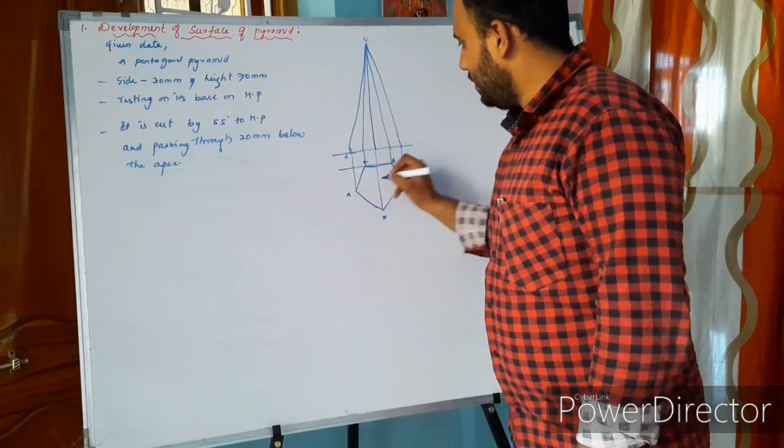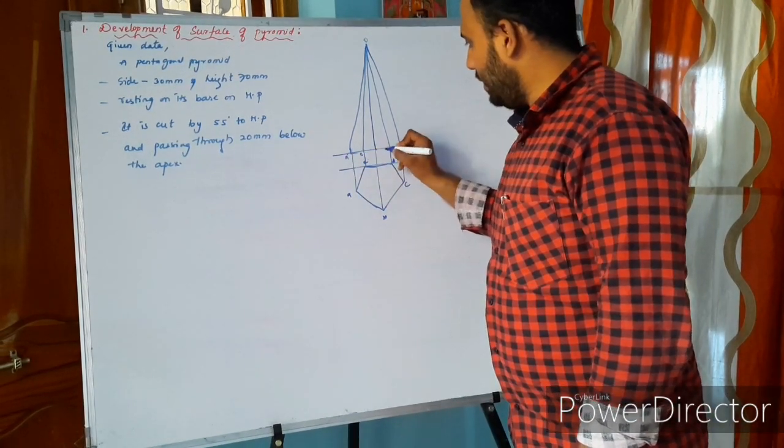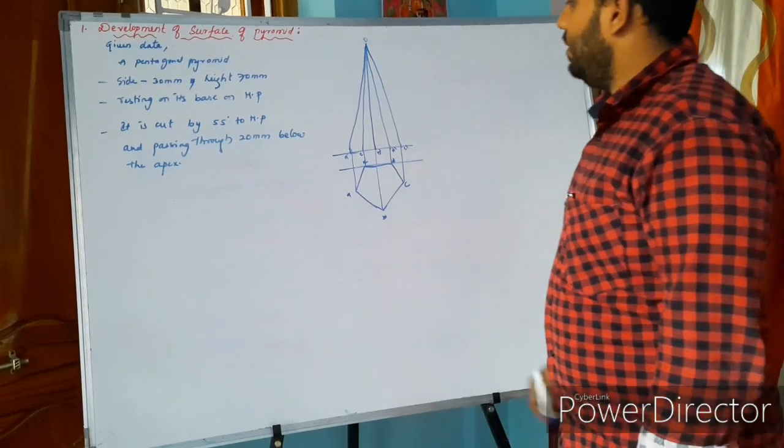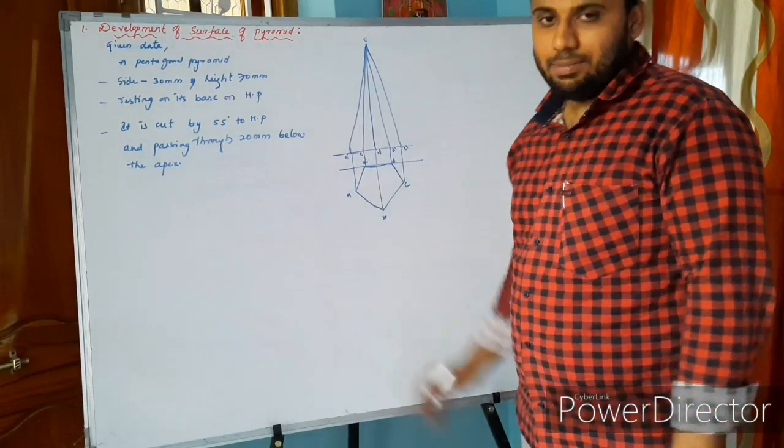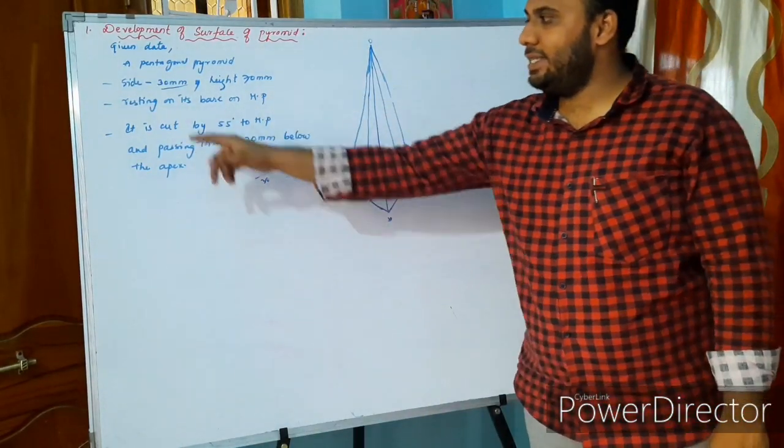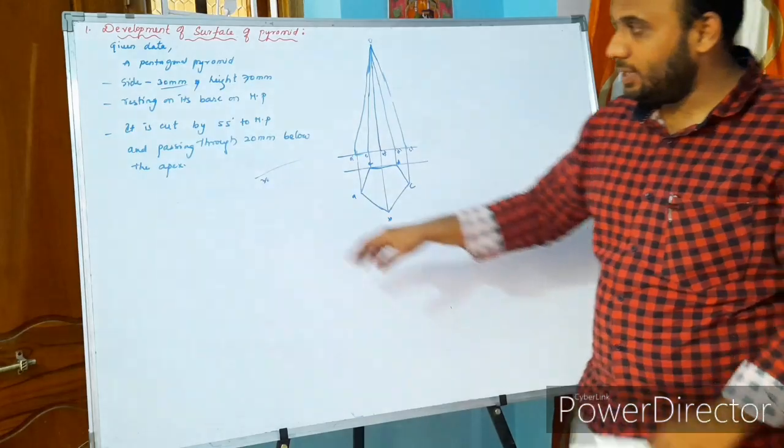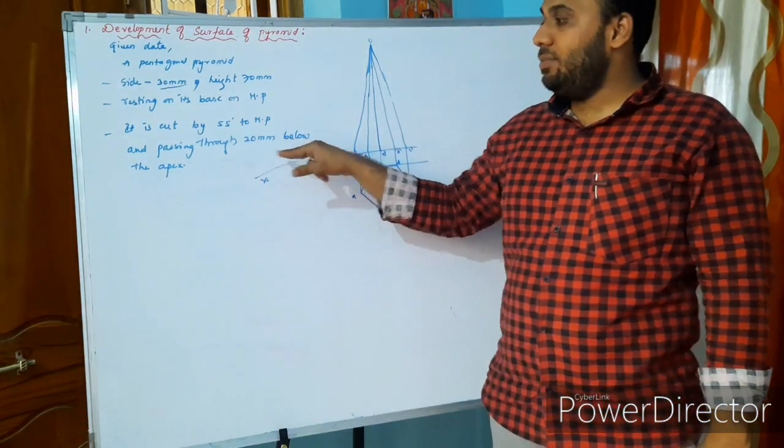From the center, its height is 70mm. Right, you've got a pentagonal pyramid resting on its base on HP. One of its base is on HP. Indicate A dash, B dash, E dash, D dash, C dash. This is our half problem completed. Now the second portion: it is cut by 25mm to HP.